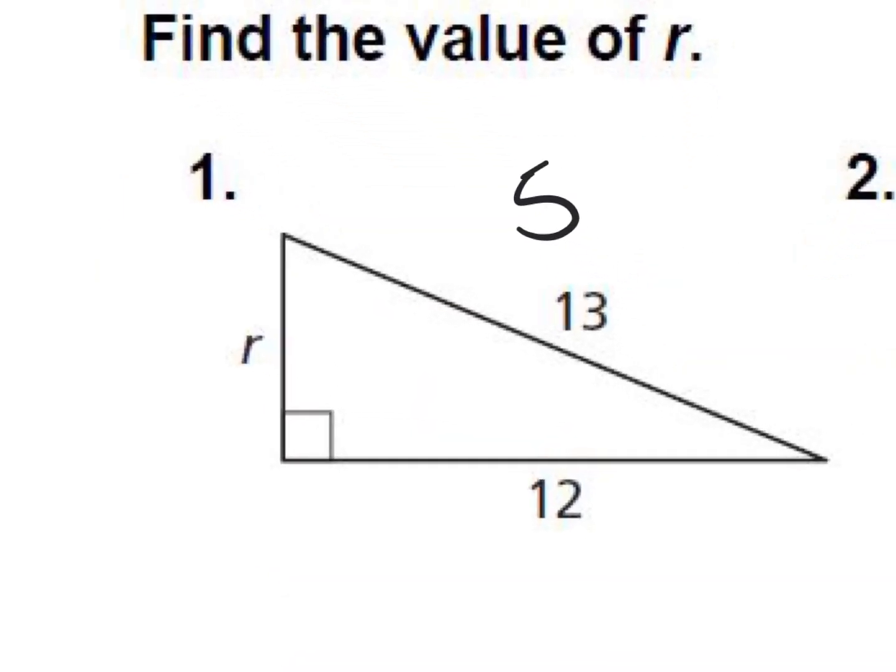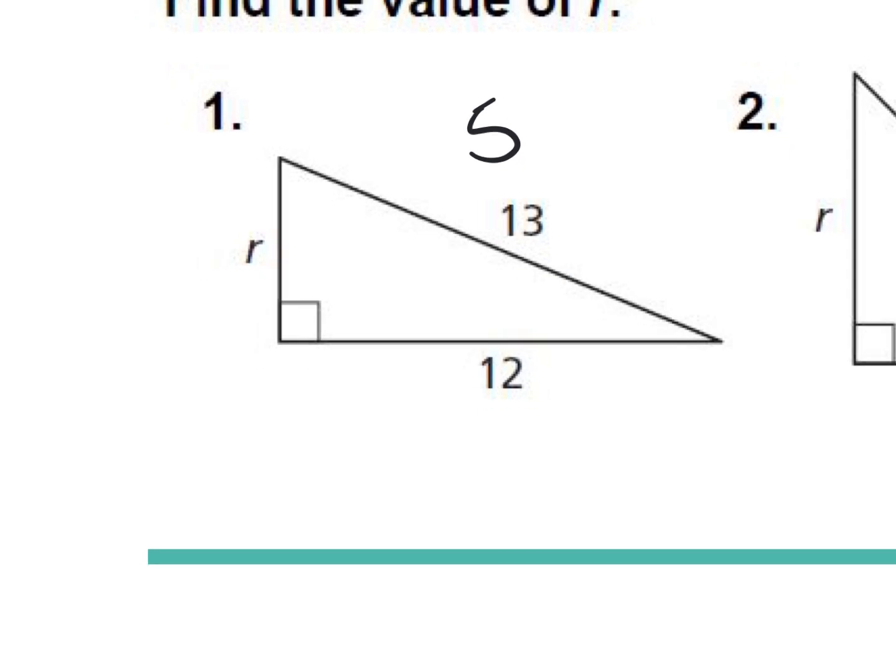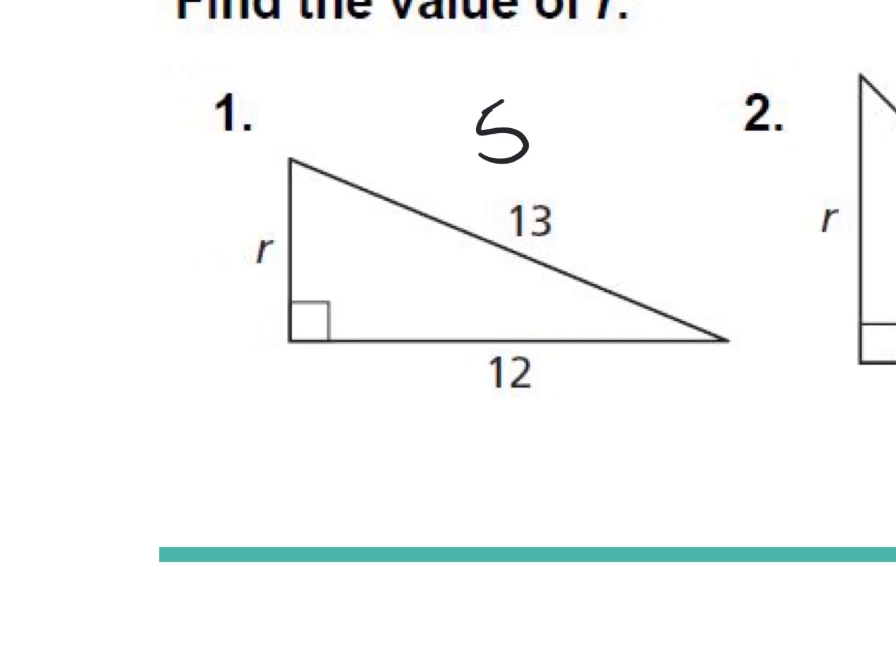For number one, what do we do? John says A squared, B squared, and C squared. What is that called? Niagara. Yeah, buddy.